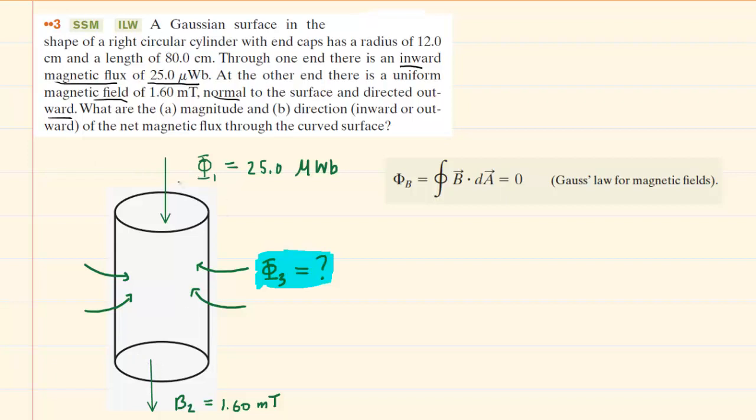Notice that the first quantity was a magnetic flux, so we've used this Greek letter here to represent that flux, but the second quantity was a magnetic field, so we've used the letter B to represent that magnetic field.